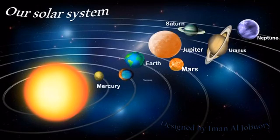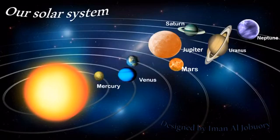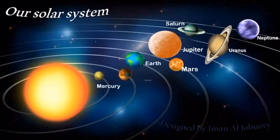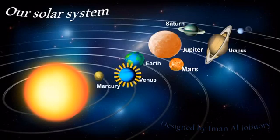Venus shines bright, we can see it at night. There's our Earth, blue and green, the most beautiful planet ever seen. Jupiter is the biggest, Mercury the smallest, Venus the hottest, Neptune the furthest.